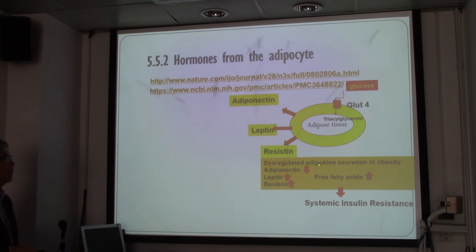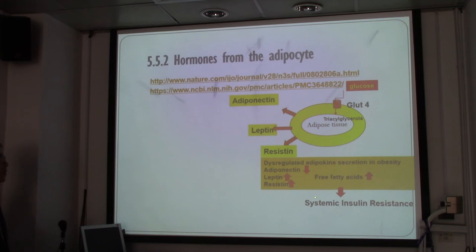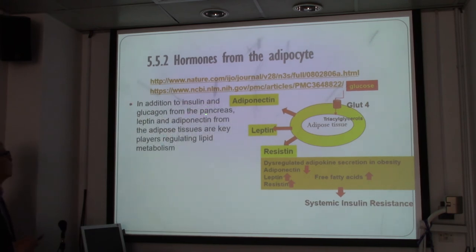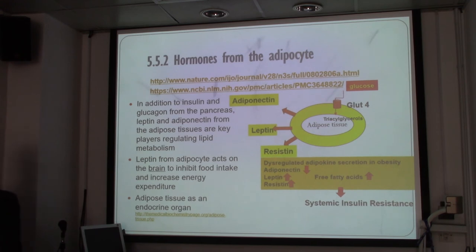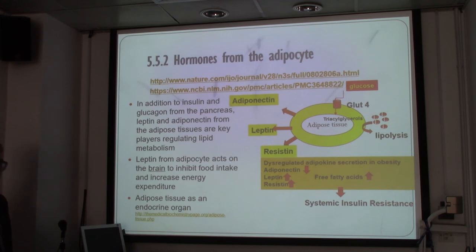Dysregulated adipocyte secretion in obesity leads to decreased adiponectin, and increased leptin, resistin, and free fatty acids, causing systemic insulin resistance with more fatty acids in the blood. In addition to insulin, leptin and adiponectin from adipose tissues are also key in regulating lipid at the whole-body level. Leptin from adipocytes acts on the brain to inhibit food intake and increase energy expenditure. Adipose tissue may therefore be called an endocrine organ, and from lipolysis we can return stored lipid to produce energy.